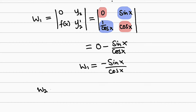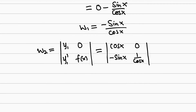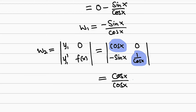Now let us find W2. We keep the first column constant as [y1; y1'] = [cos(x); -sin(x)], and replace the second column with [0; f(x)] = [0; 1/cos(x)]. Taking the determinant: cos(x)·(1/cos(x)) - (-sin(x))·0 = cos(x)/cos(x) - 0 = 1. So W2 = 1.